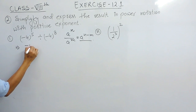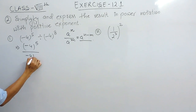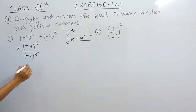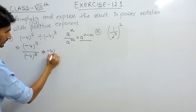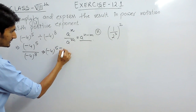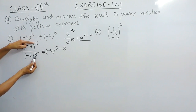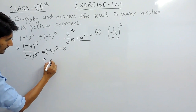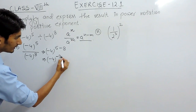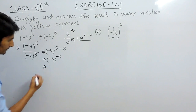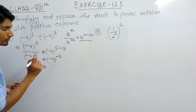This can be written as minus 4 raised to power 5, divided by minus 4 raised to power 8. Since they are divided with the same base, we can write the power as 5 minus 8, giving us minus 4 raised to power minus 3. Because we have to write it in positive exponents, the power should be positive.